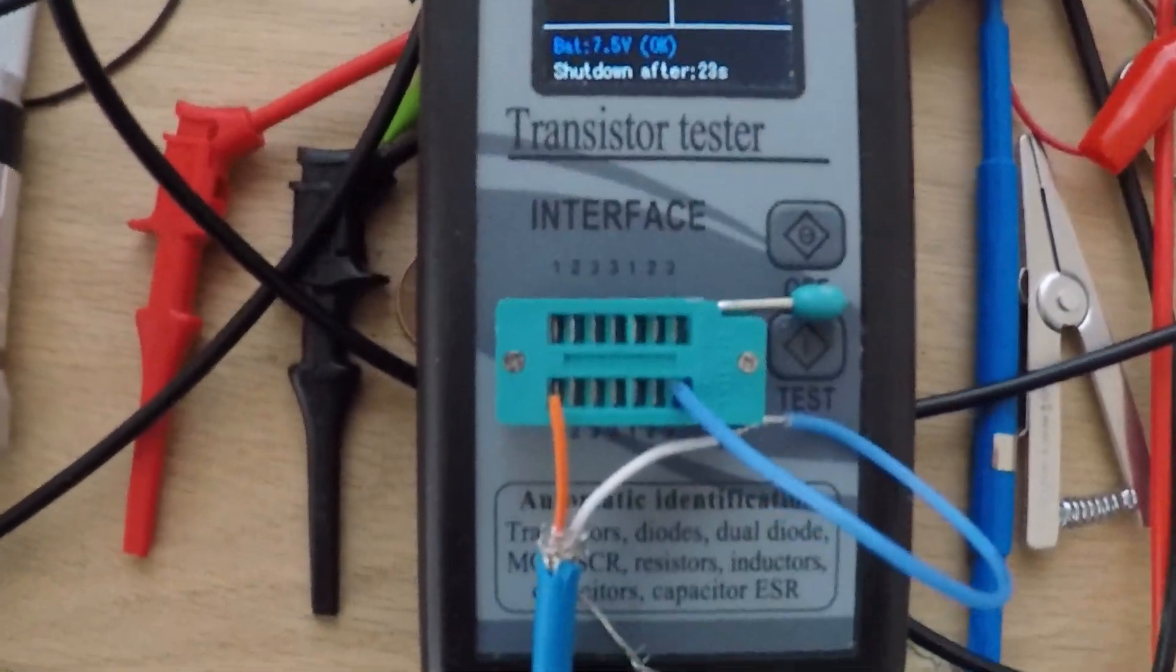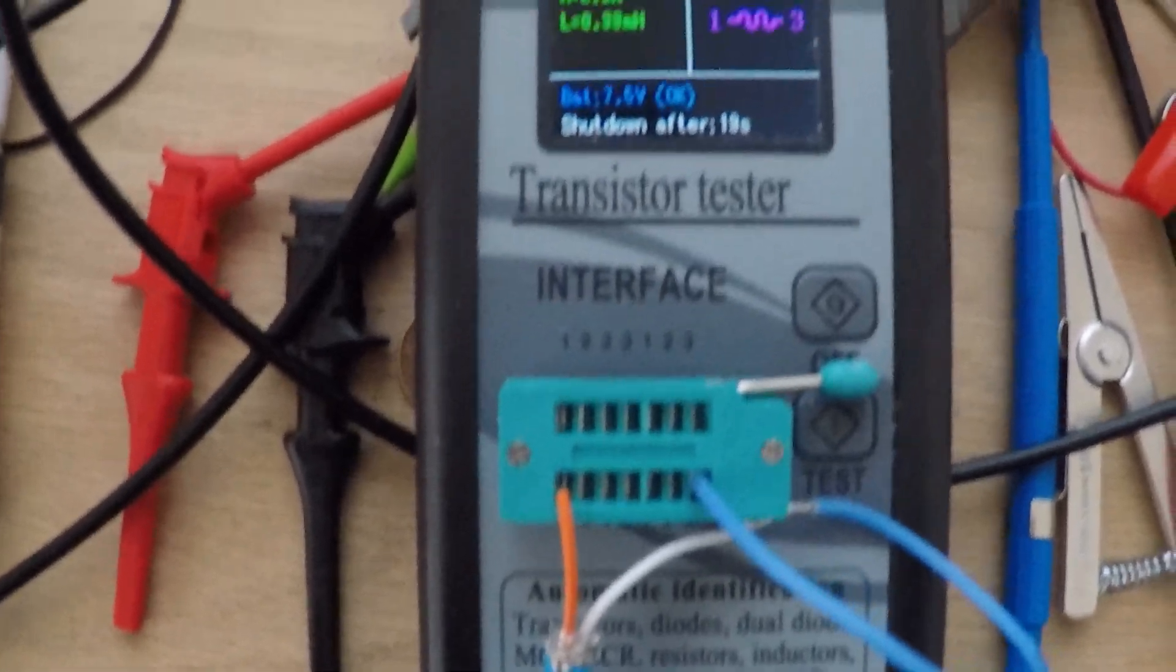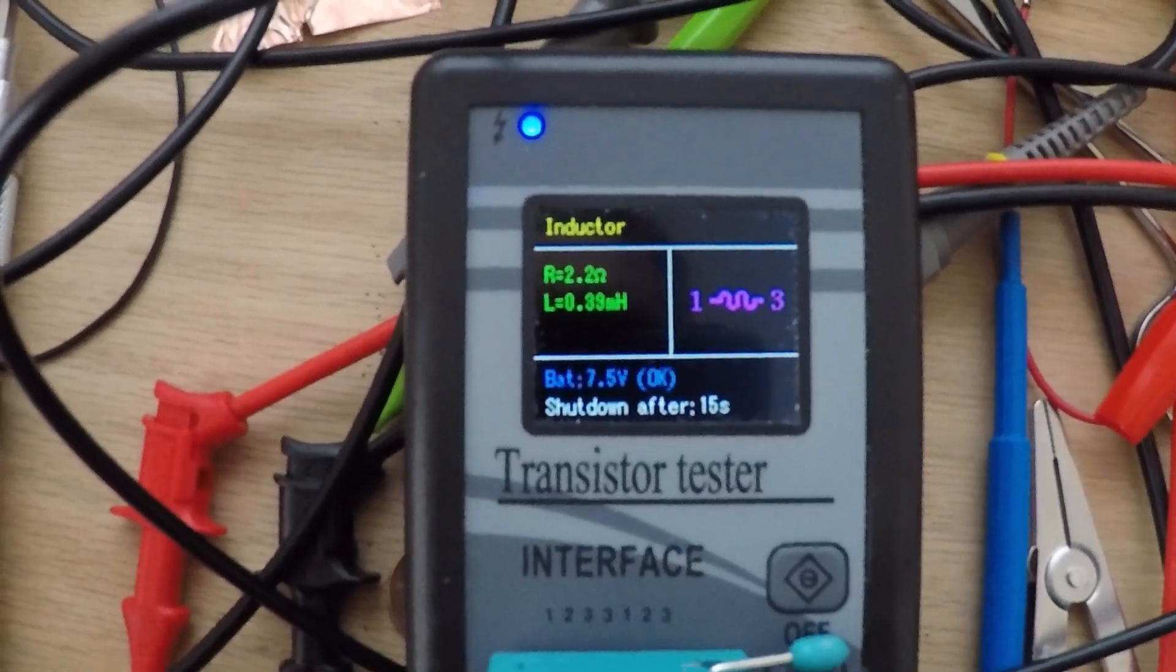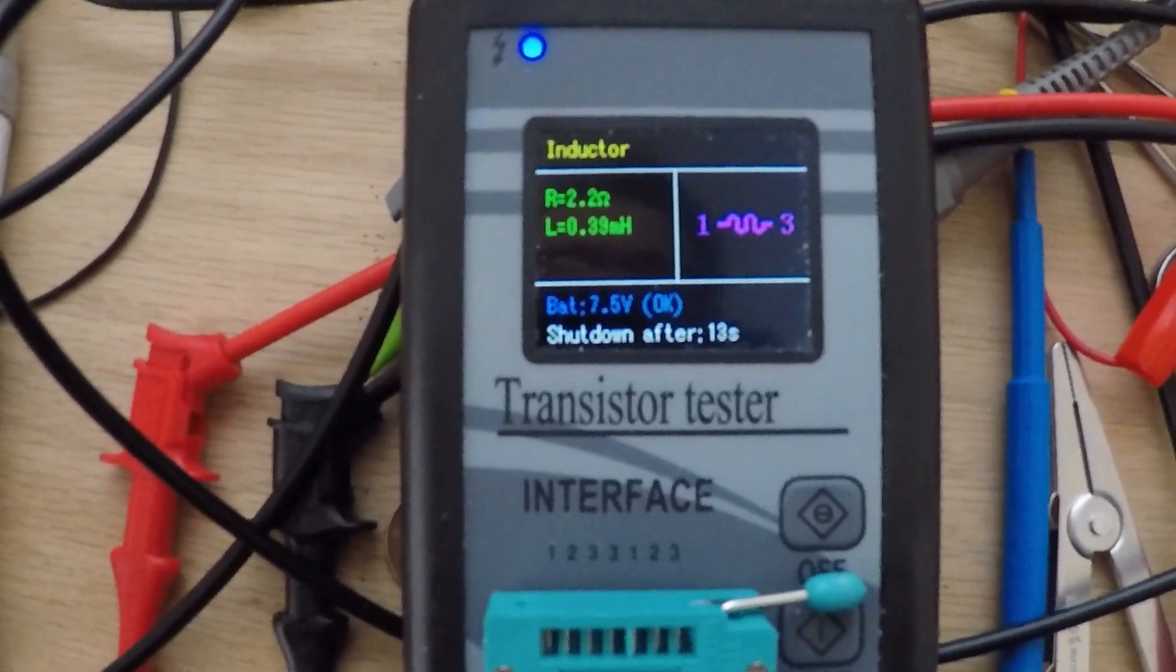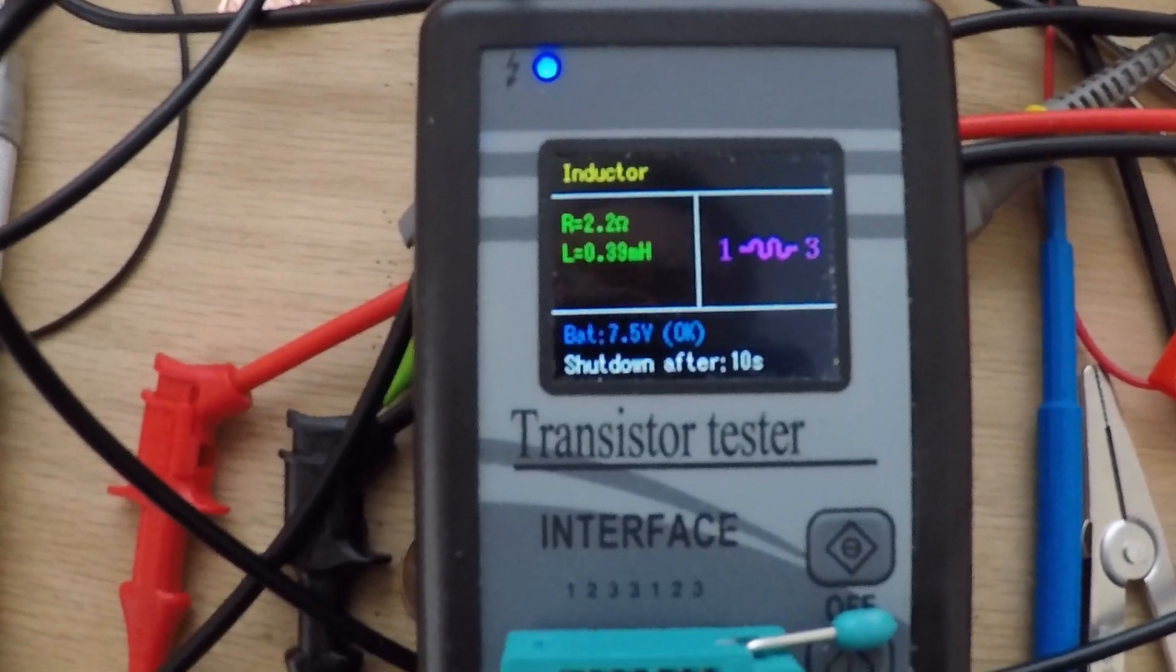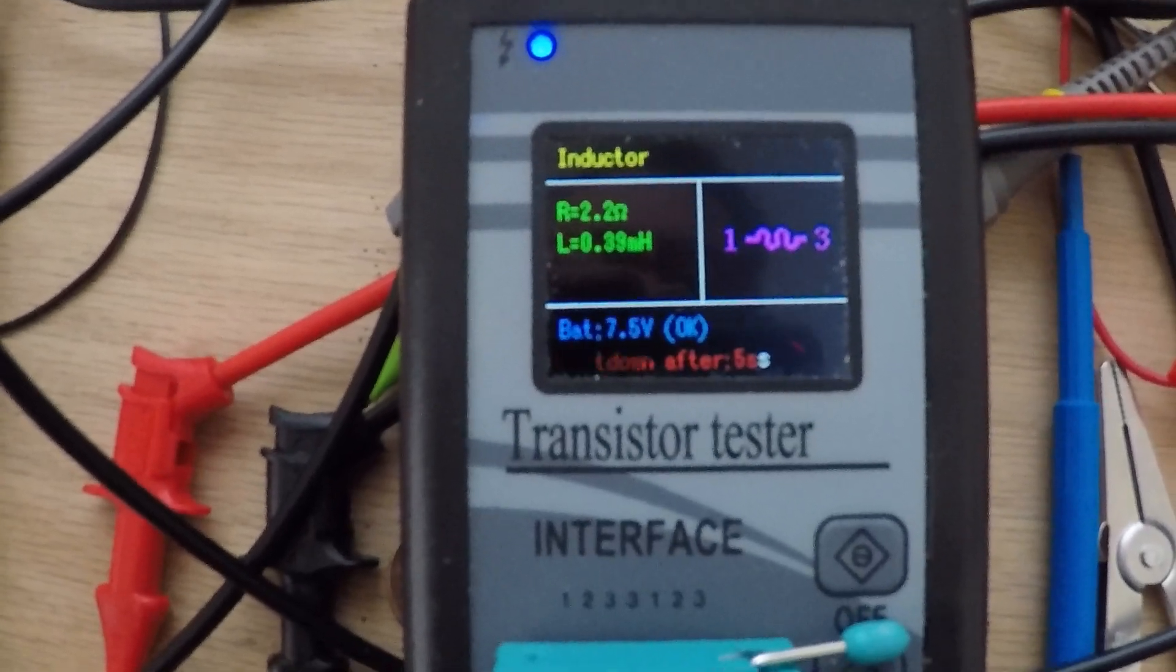Okay guys, here I am with my Chinese transistor tester and just a little shot of the reading of my coil: 2.2 ohms and I've got 390 microhenries.